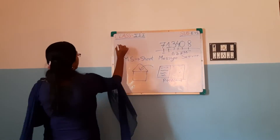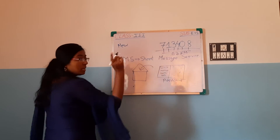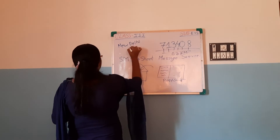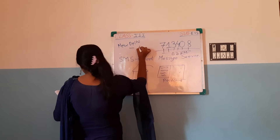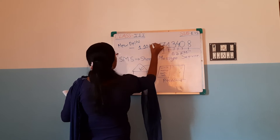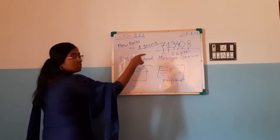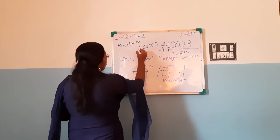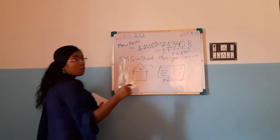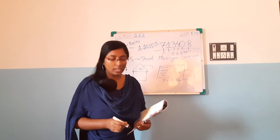Let's look at another example — New Delhi. The New Delhi PIN code is 110001. See, it is also 6 digits: 1, 1, 0, 0, 0, 1. So always a PIN code is a 6-digit number.